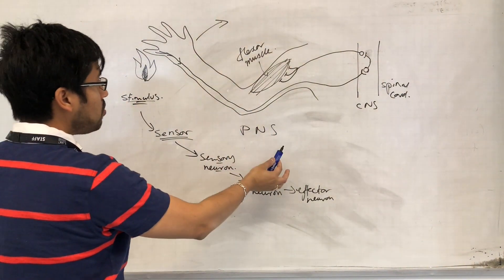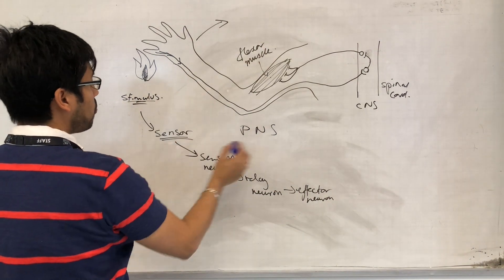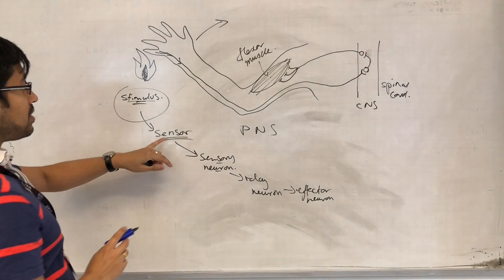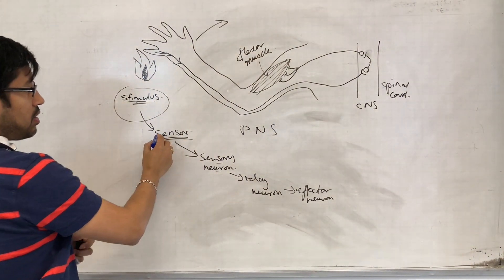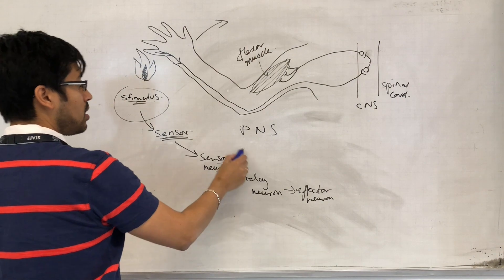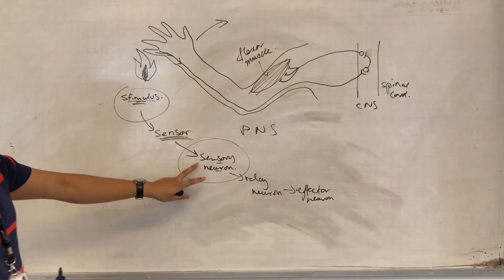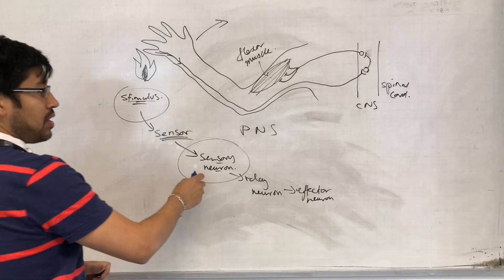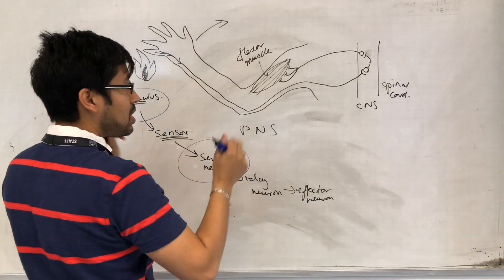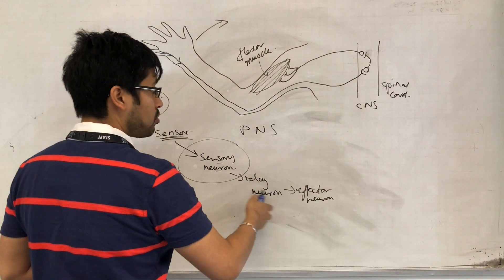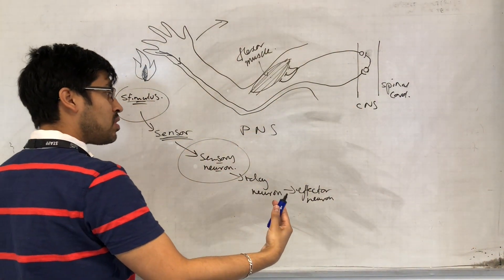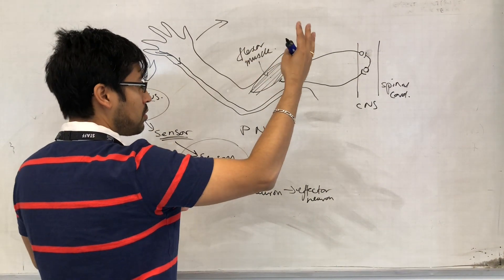So let's just quickly review that. What we needed was a stimulus. Stimulus caused the sensor to detect some change. The sensor detecting the change generates impulses in the sensory neuron. This is important. The sensory neuron transmits or allows the impulse to go towards the central nervous system, brain, spinal cord, etc. In a basic reflex, it doesn't need to go to the brain.